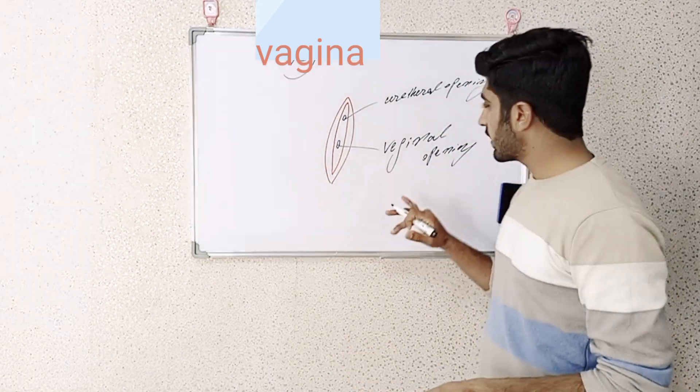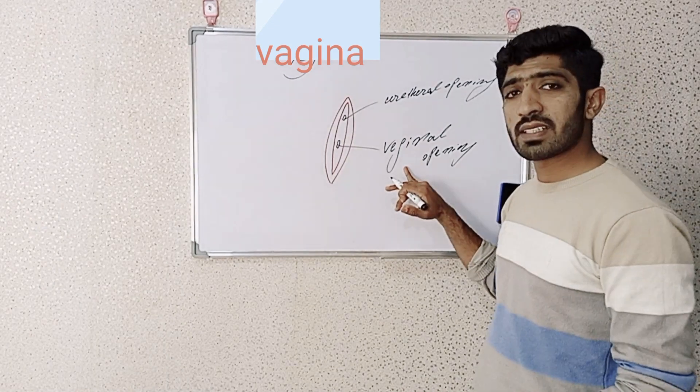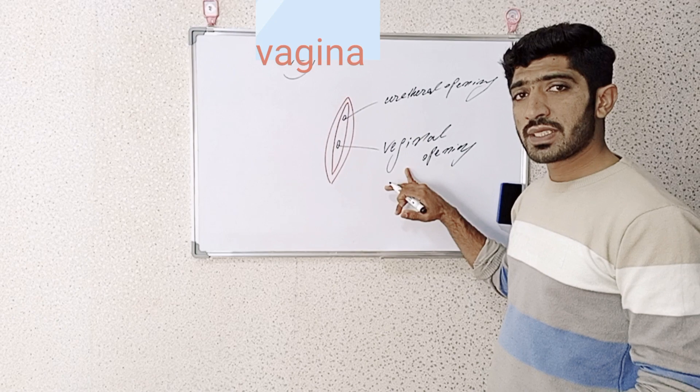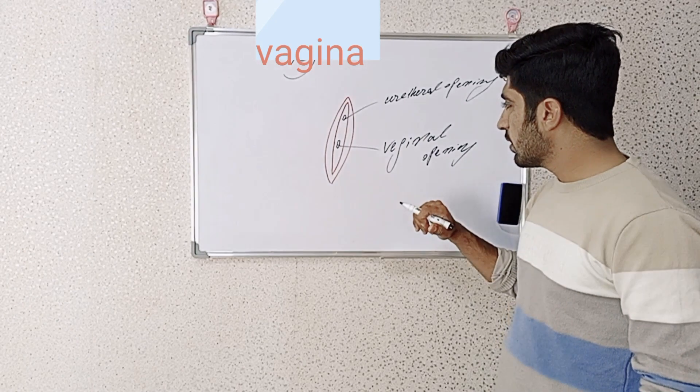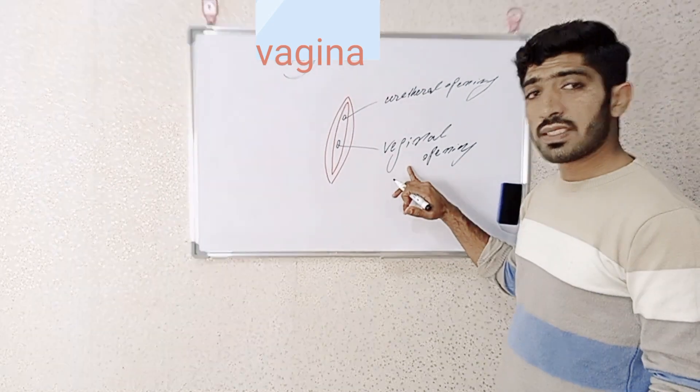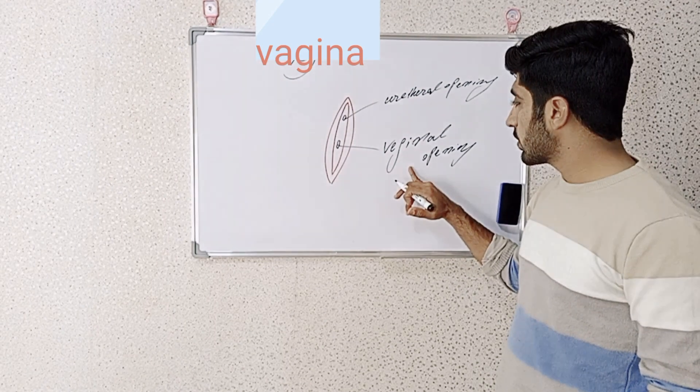The vaginal opening receives the penis during sexual intercourse, serves as a conduit for menstrual flow, and during childbirth, the baby comes out through the vaginal opening.